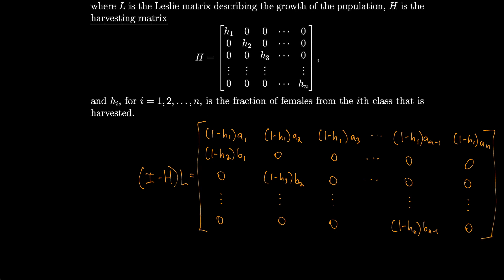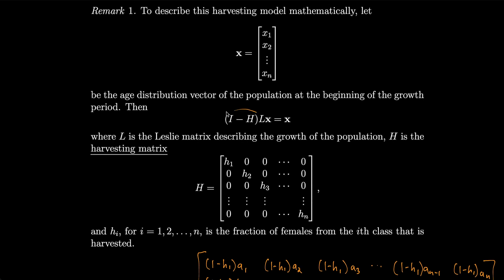What if we wanted to harvest in a uniform fashion, meaning we set all of the h-values in the harvesting matrix equal to each other — h1 equals h2 equals h3, and so on, all equal to one single h? Then the left side simplifies to (1 minus h) times L, and we can divide by that to get Lx equals (1 over 1 minus h) times x.